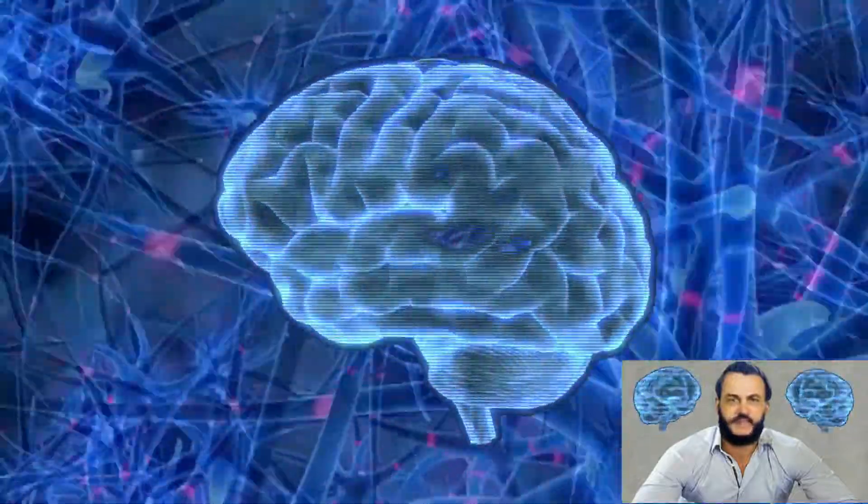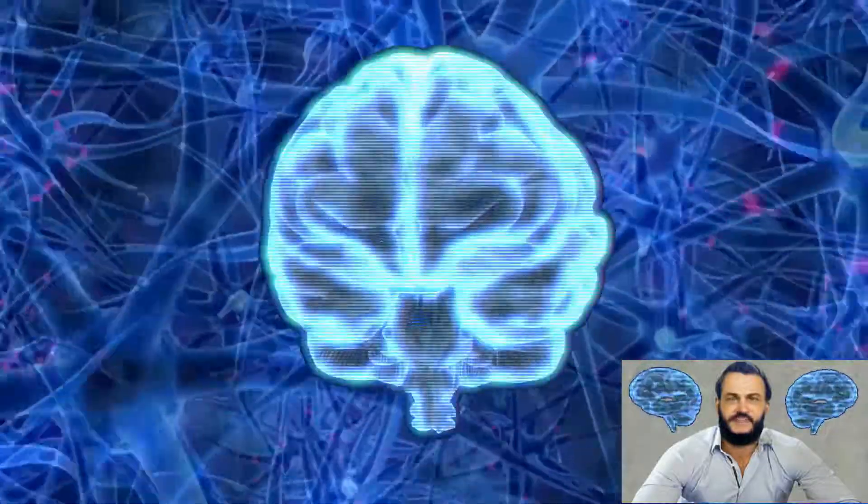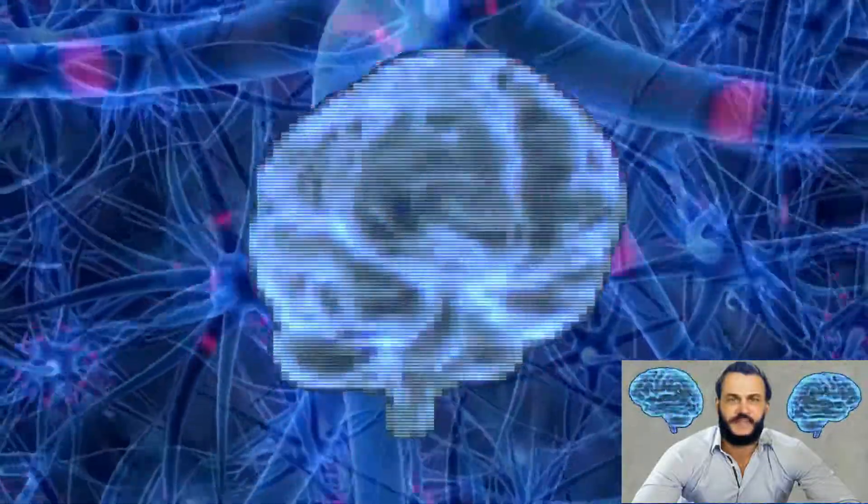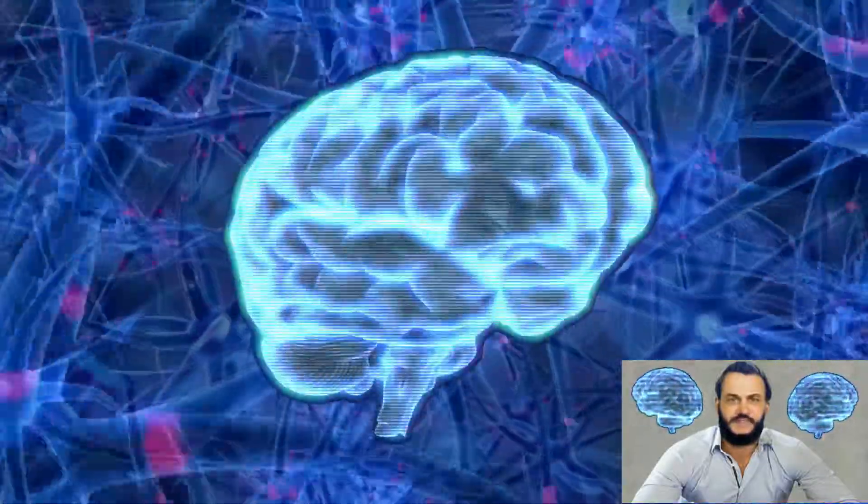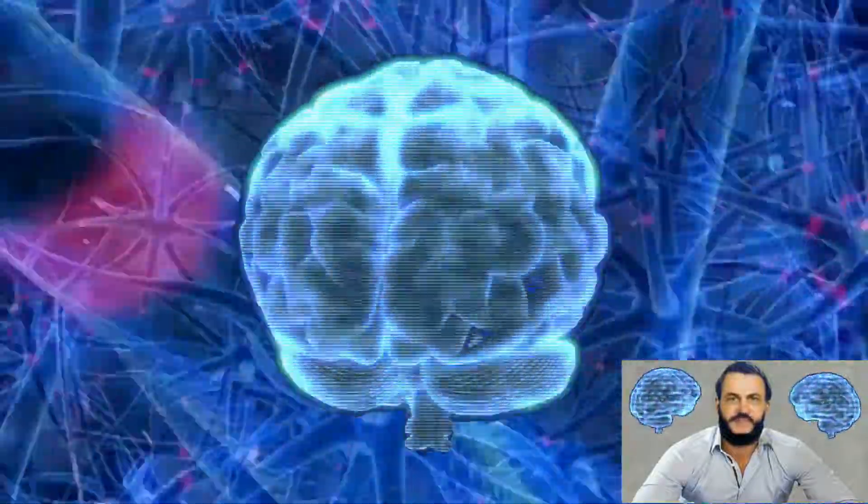Before we can access the power of our subconscious mind and manifest the outcome we desire, we have to understand how our mind works. Your mind has two sides: the conscious or rational level, and the subconscious or irrational level. You think and reason with your conscious mind, and your subconscious mind is the seat of your emotions and is the creative mind.